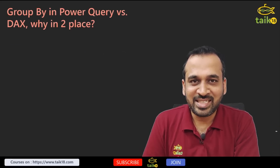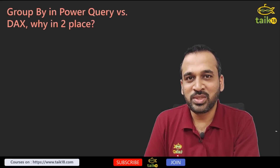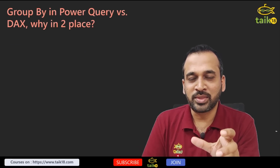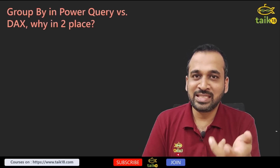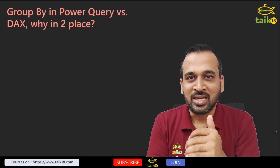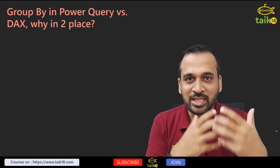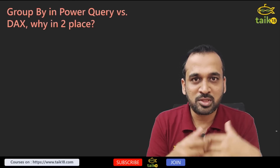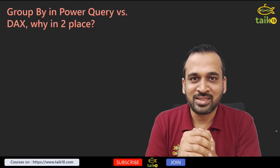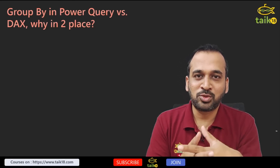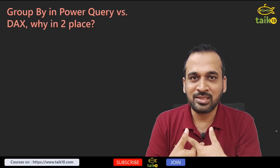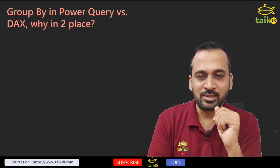So this is the tricky question which I usually ask. We have a Group By function in Power Query and we also have a Group By function in DAX. Why is this in two different places? Since both serve the purpose of grouping data, why do they exist separately? When I ask this, many people don't give the right answer, though some do.